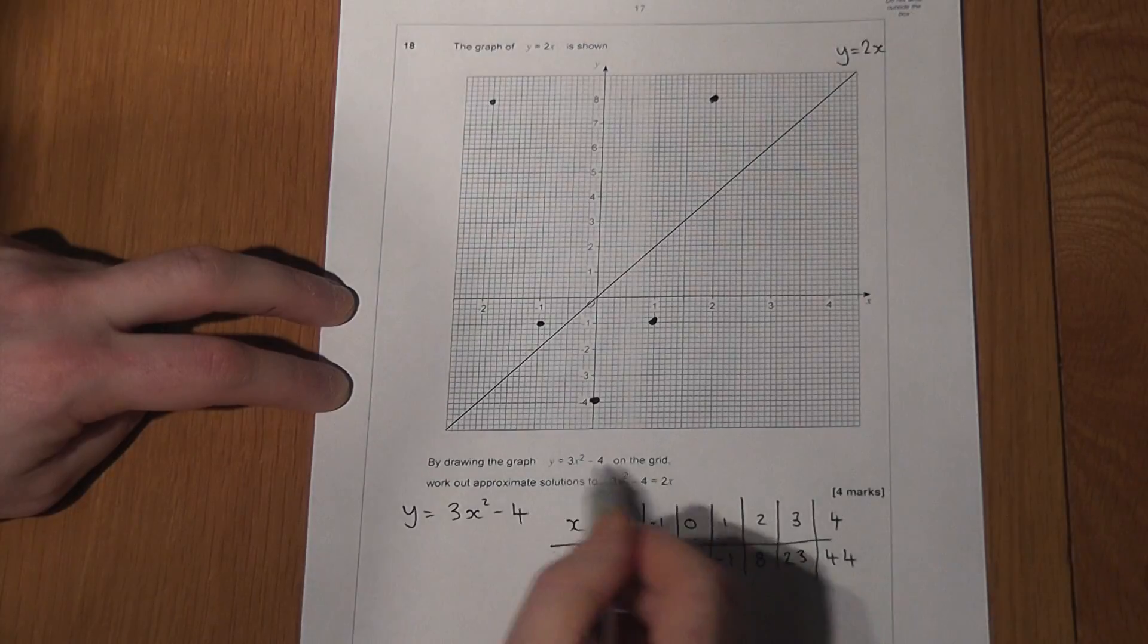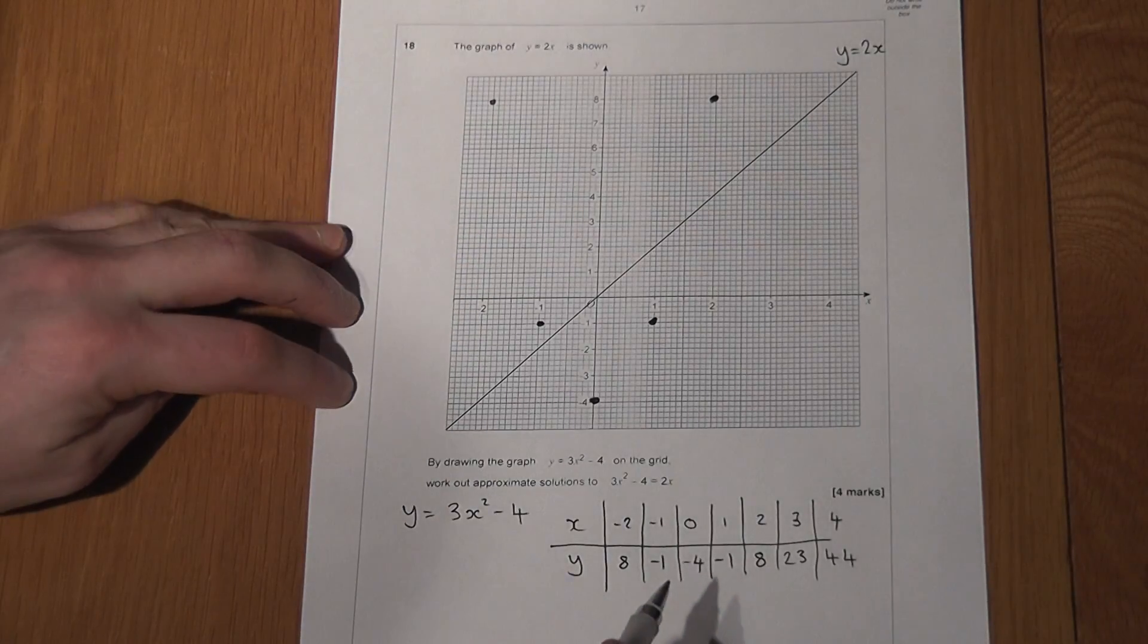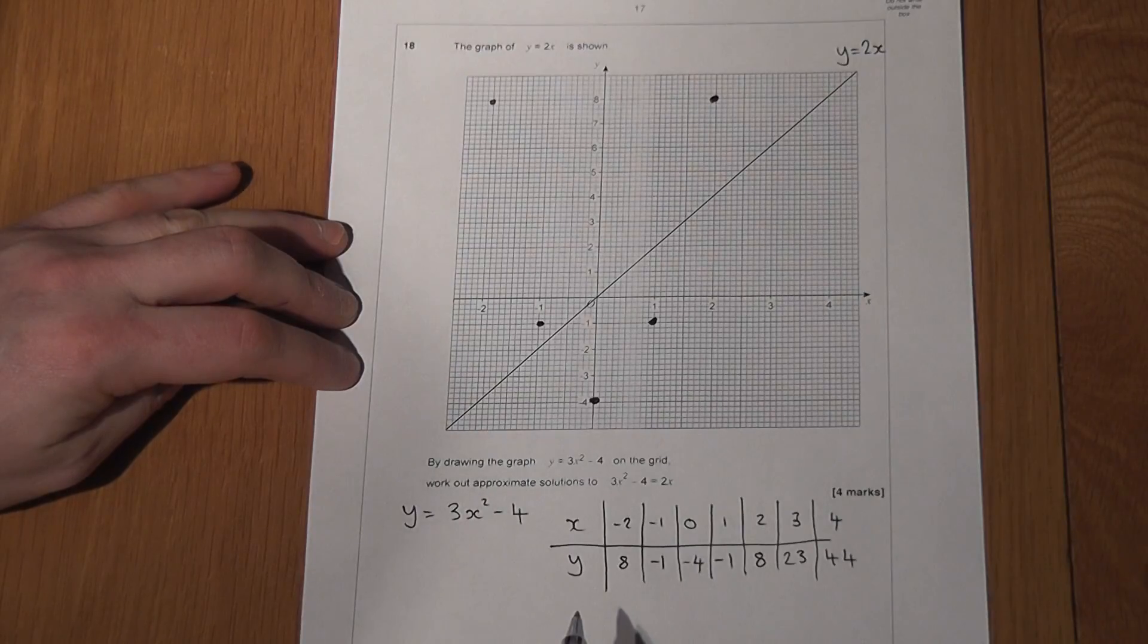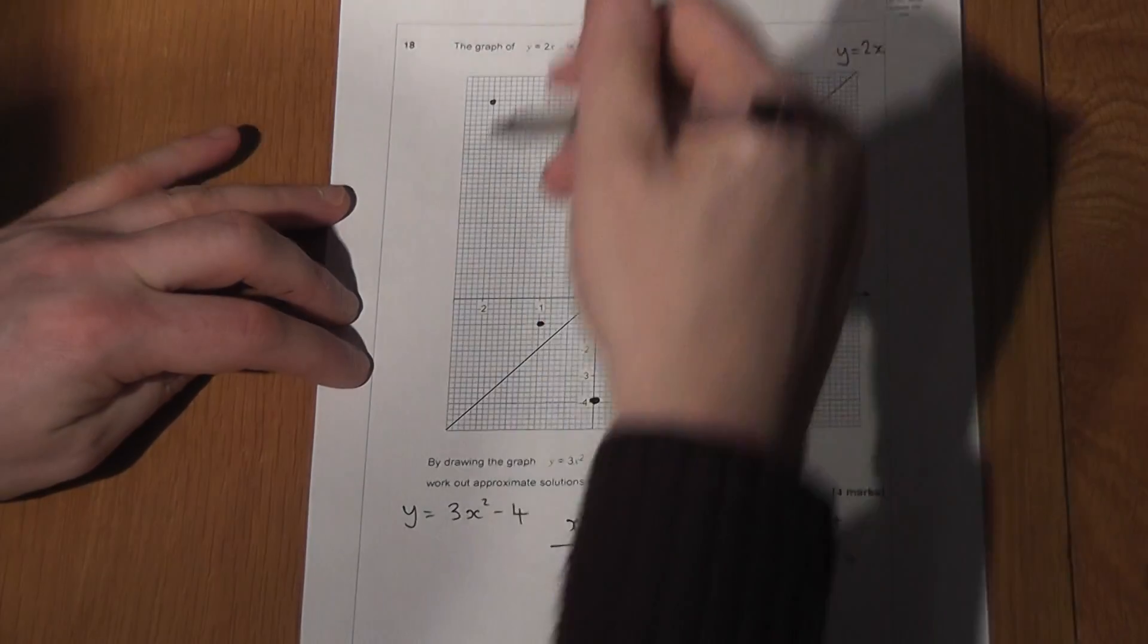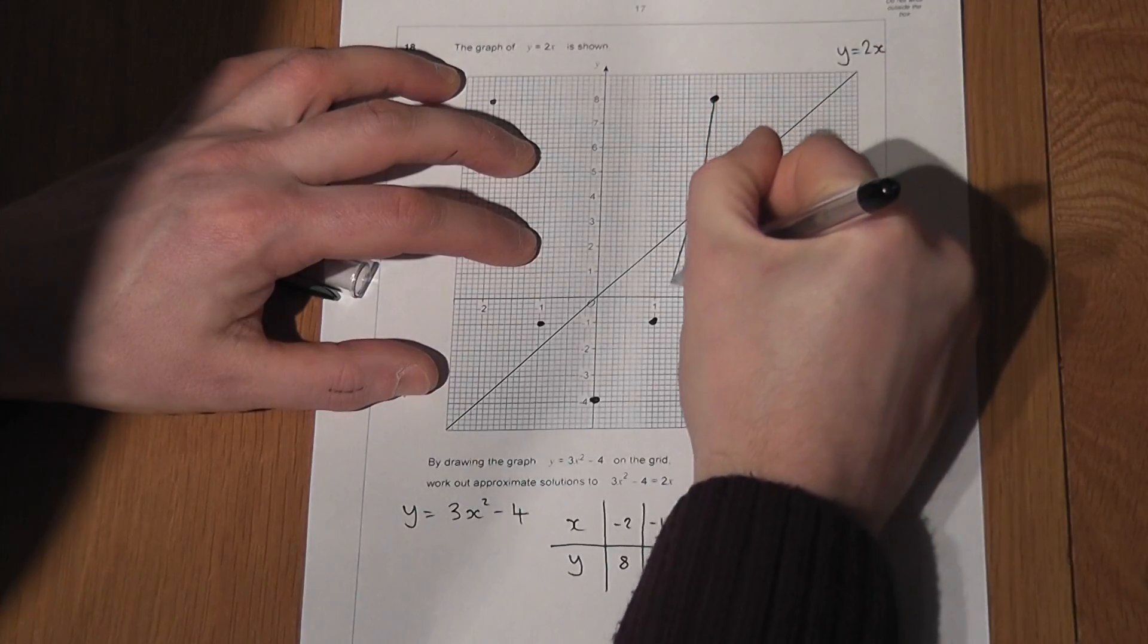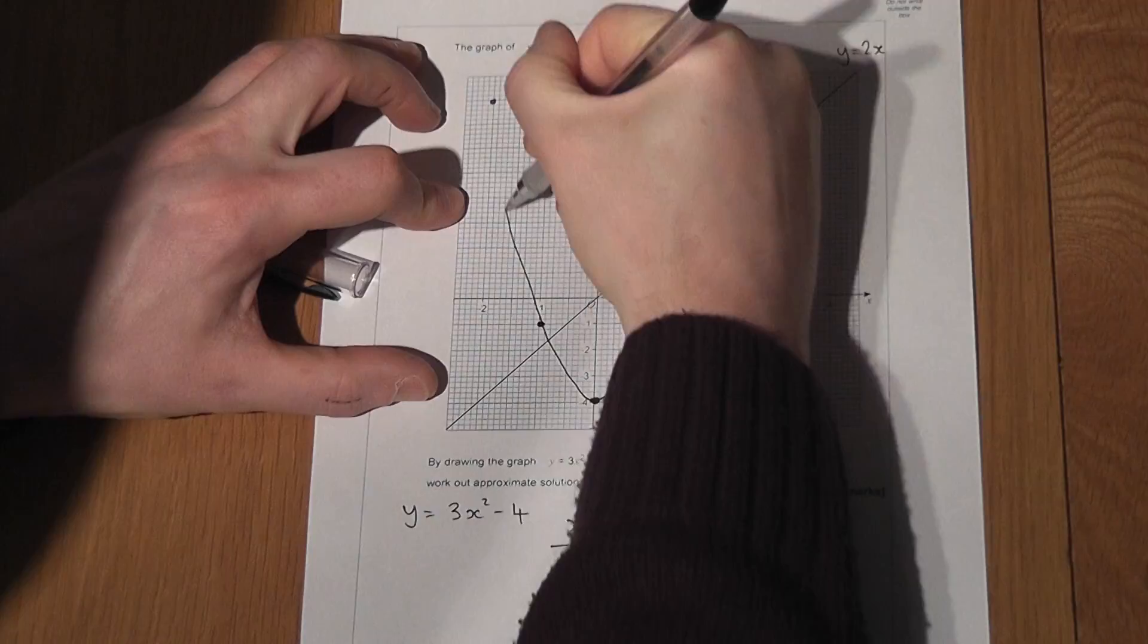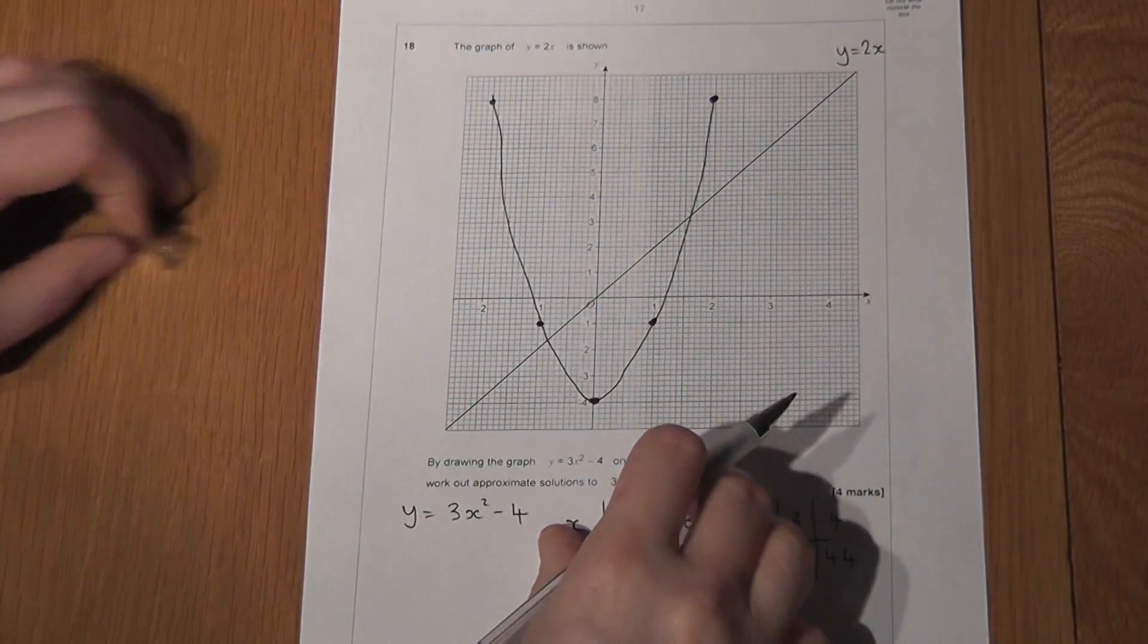Now, before I solve the final part of the problem, I'm going to draw a smooth curve through these coordinates. We'd use a pencil in the examination. So here we go. A nice, smooth parabola passing through those coordinates.